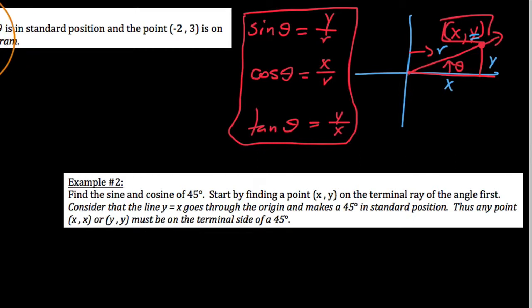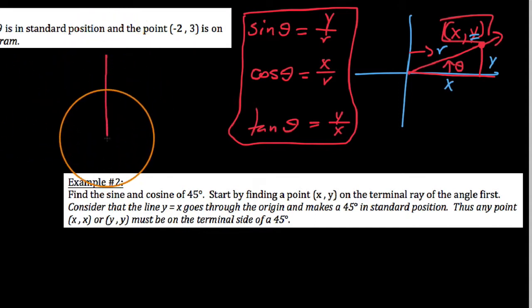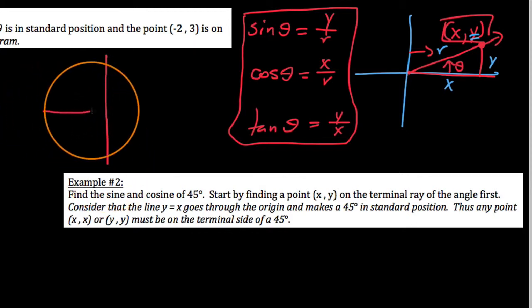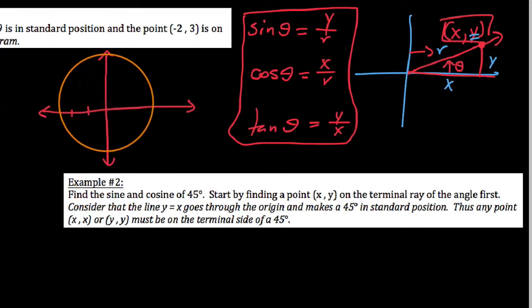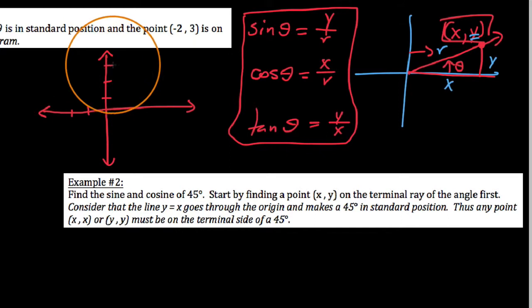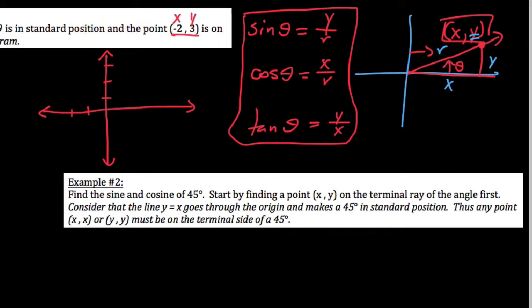Find the six trig functions of theta if theta is in standard position and the point negative 2, 3 is on the terminal side. We want to start always by making a sketch and being clear on what we're talking about. It looks like we're going left 2 and then up 3. This is our point x, y on the terminal side. So x is negative 2 and y is 3. We'll go back and find r.